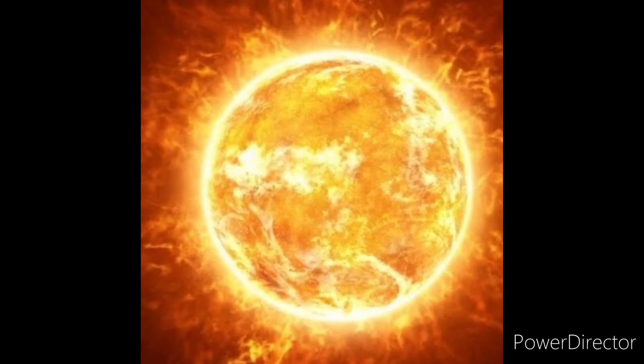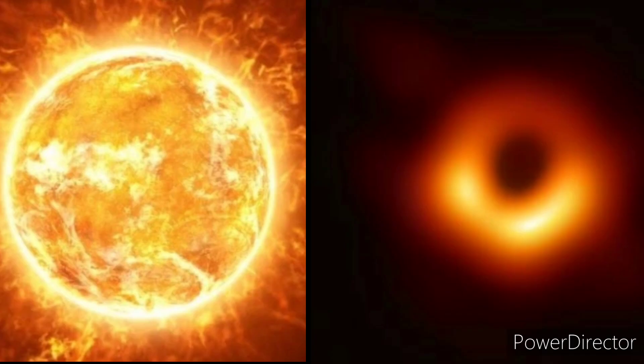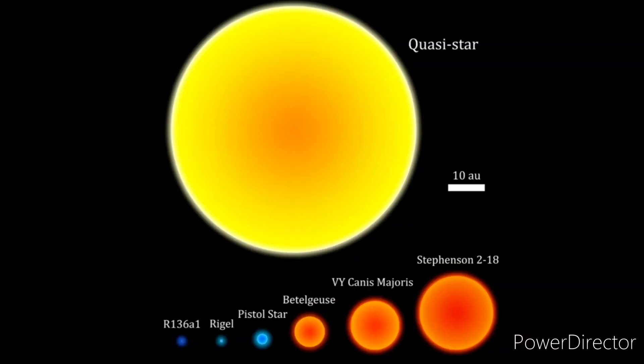Now what if I told you that there is an extremely massive hypothetical star type that lived during the early periods of our universe, powered by material falling into a black hole at its core? And it is approximately 15 times the size of the largest discovered hypergiant star, Stephenson 218, and is extremely luminous at the same time.